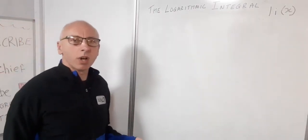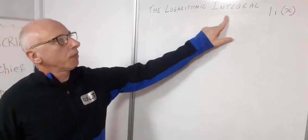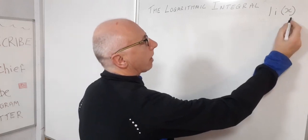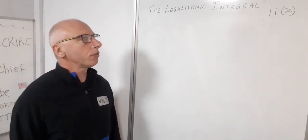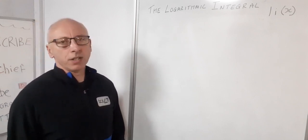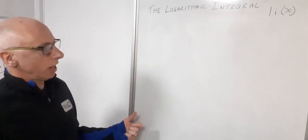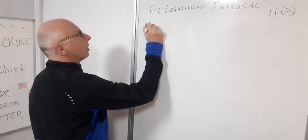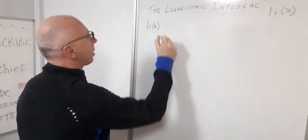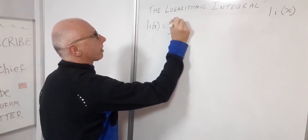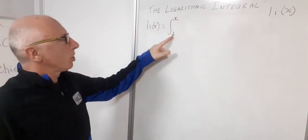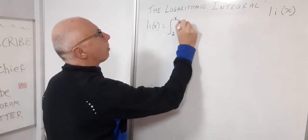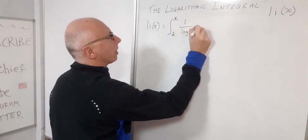This is the second video in a series on the prime number theorem. One important part of establishing it is using the logarithmic integral, written as Li. We use that terminology because the logarithmic integral is non-elementary. The integral is written as Li(x), going from 2 to x, of 1 over log(t) dt. We start from 2 because 2 is the first prime number.